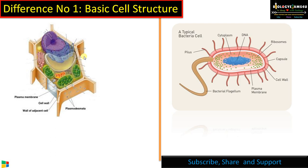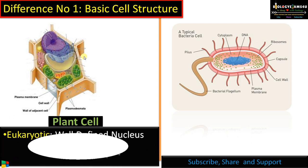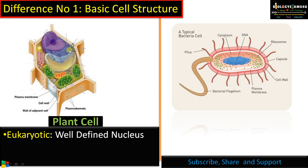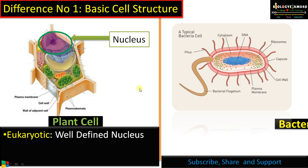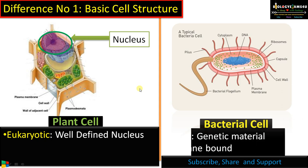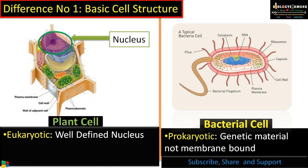Let's move into the differences. Difference number one: basic cell structure. As you all know, plant cell is eukaryotic — it has a well-defined nucleus. Here you can see the genetic material is surrounded by a nuclear membrane, which is why we call it a true nucleus or eukaryotic. Whereas in the case of bacteria, the bacterial cell is prokaryotic — the genetic material is not surrounded by a membrane. 'Pro' means first-formed, and 'karyo' means nucleus, so prokaryotic means primitive nucleus.